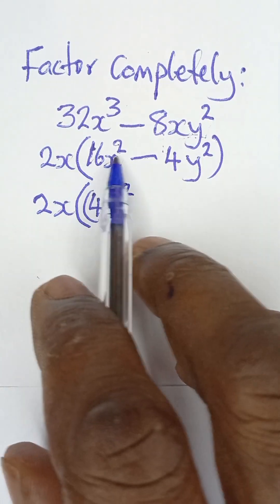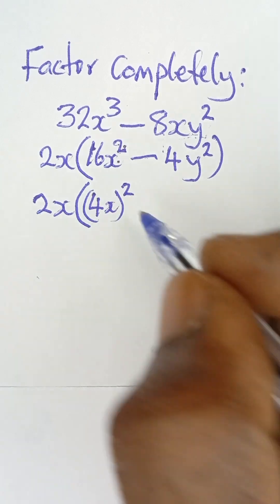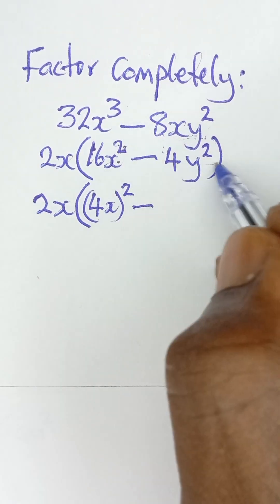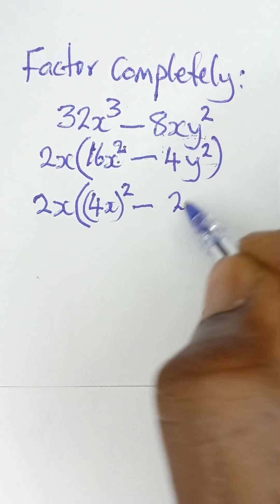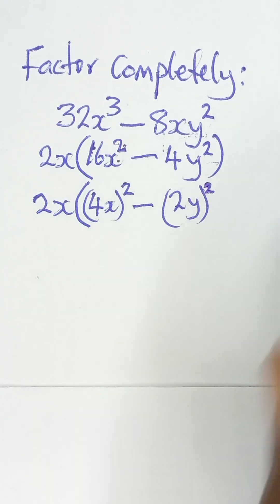So that when you square this it gives you 16x². Don't forget, this square affects both the 4 and the x. And then minus, the square root of this is 2y and then all squared.